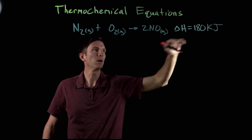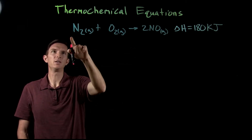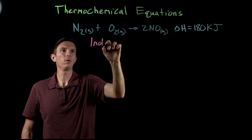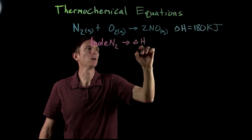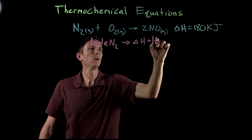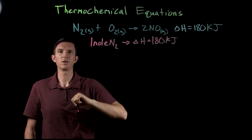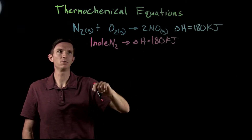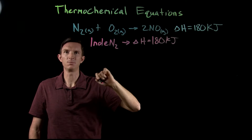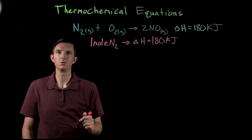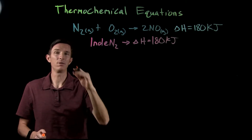We measure the enthalpy for this reaction to be 180 kilojoules. What does that mean with regards to our reaction? It means if I take one mole of nitrogen, I'm going to get an enthalpy of 180 kilojoules. Similarly, one mole of oxygen gives us 180 kilojoules, and two moles of nitrogen monoxide gives us 180 kilojoules. So enthalpy is dependent on amount.